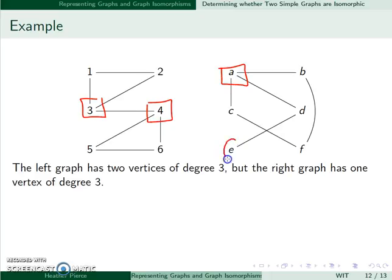In addition, I'll notice that in the right graph I have a vertex of degree 1, and I don't have that in the left graph. So that's another reason to say they are not isomorphic.